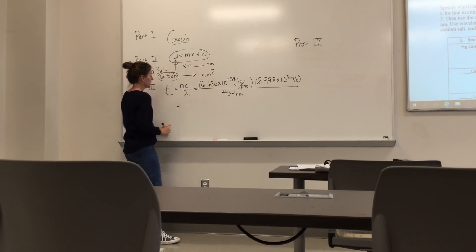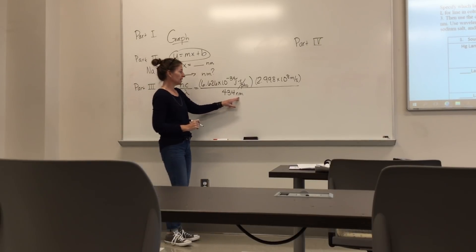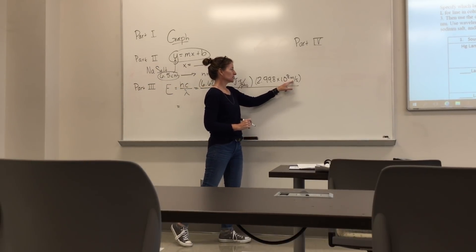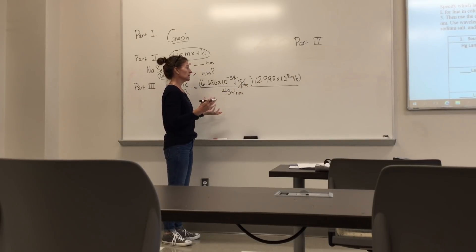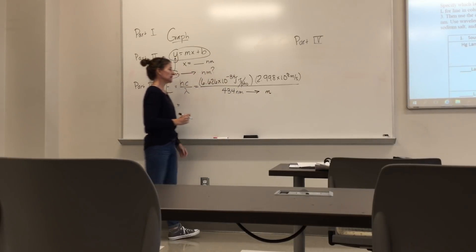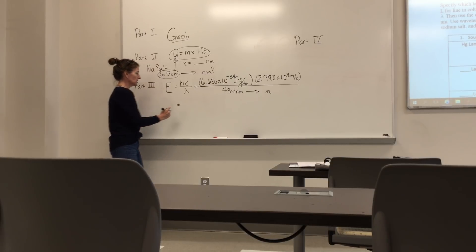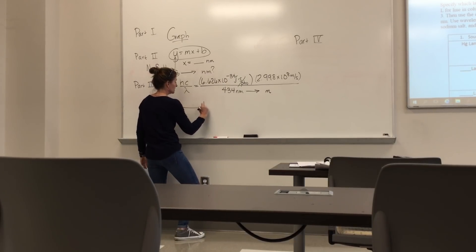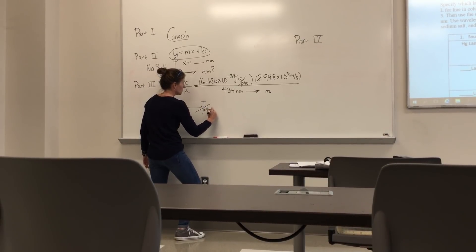Because remember, we want to end in an energy unit. And you'll notice I have nanometers here and meters here. So I have to reconcile those two. They can't be in different units. So you've got to do a conversion to meters. You need to get that 434 to meters, then make the calculation. So here, once you get this answer, you'll end in joules per photon.